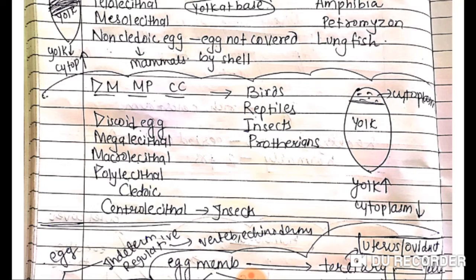To recap the dm do mpa cc mnemonic: discoid, megalecithal, macrolecithal, polylecithal, cleidoic and centrolecithal are found in birds, reptiles, insects and prototheria.